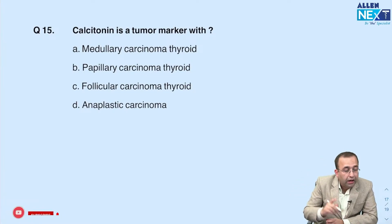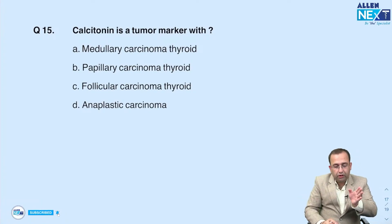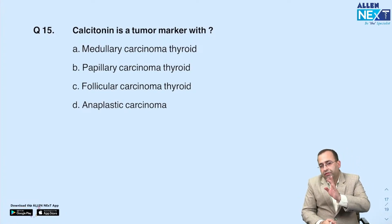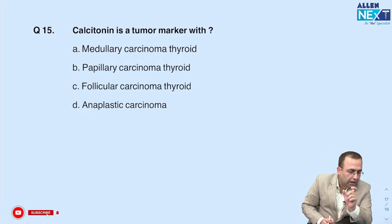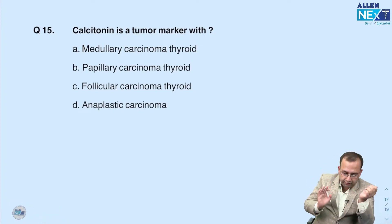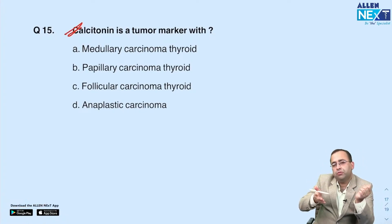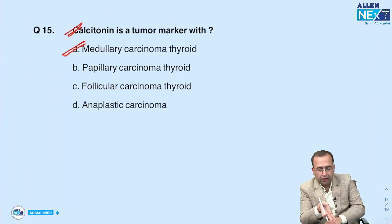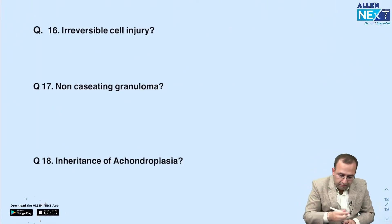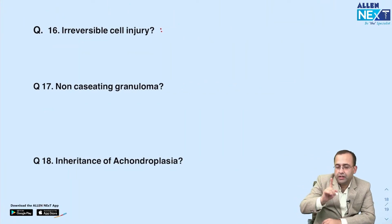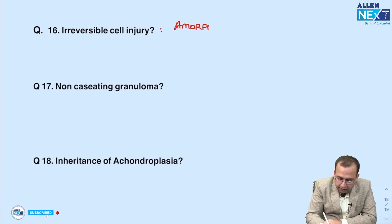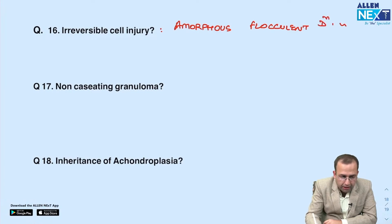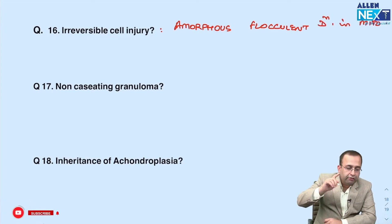An adult with recurrent gross hematuria — the answer is IgA nephropathy. The key words are 'recurrent gross hematuria' or mesangial deposits to diagnose IgA nephropathy. Calcitonin as tumor marker was asked again — same concept, medullary carcinoma thyroid. Irreversible cell injury: the first change asked was the presence of amorphous flocculent densities in mitochondria.